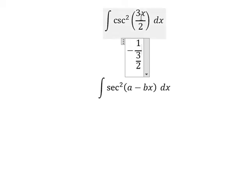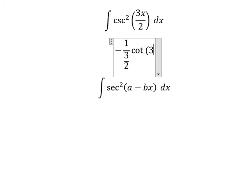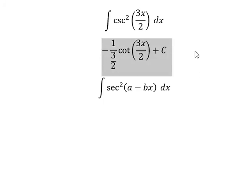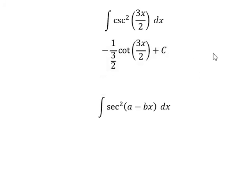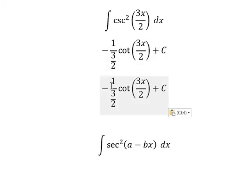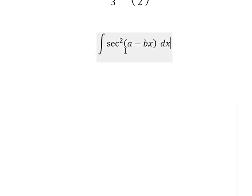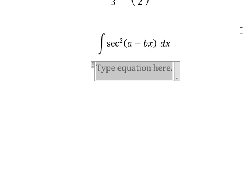And we have cotangent of 3s over 2, and we pull out the constant C. So this one we will have about 2 over 3. Next, the integration of this one — we will have about negative 1 over B, that's the coefficient negative B going here.